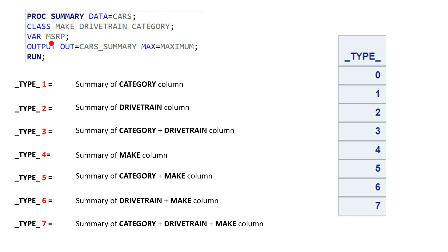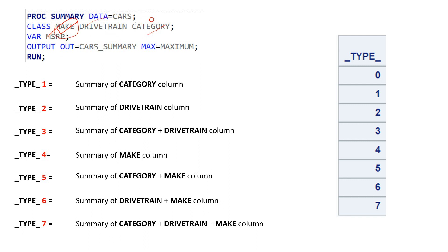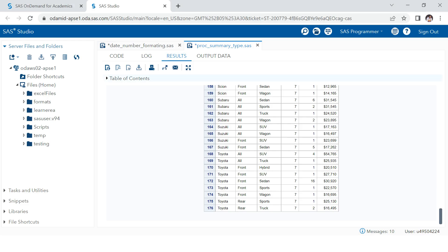Type seven is the summary of all three columns combined. This works by first summarizing the extreme right variable, then the next one, then combining those two, then summarizing the third variable, then combining the first with the third, then combining the second with the third, and finally combining all three together.